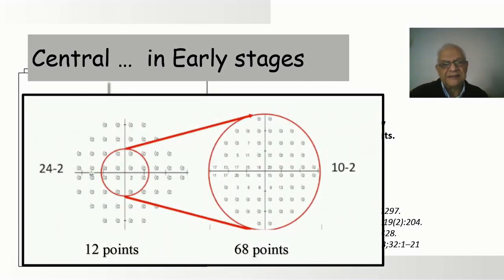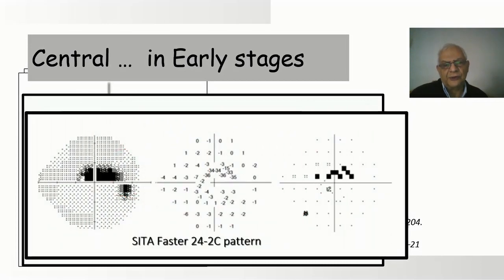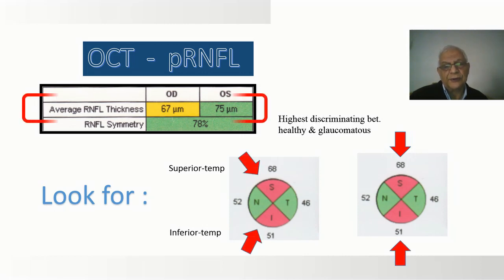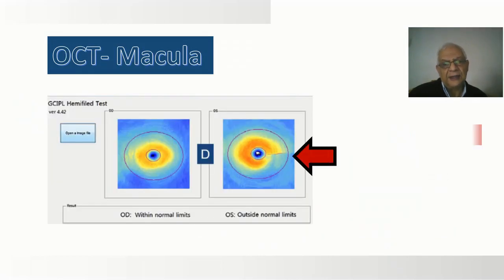We may miss such changes with a 24-degree field of vision, but with the 10-degree field the chance to detect them is high. That is why a new Humphrey 24-2 software included central points commonly affected in early stages of glaucoma. On the OCT, you need to check the superior and inferior quadrant, superior temporal, inferior temporal, and the average thickness of the retinal fiber layer.